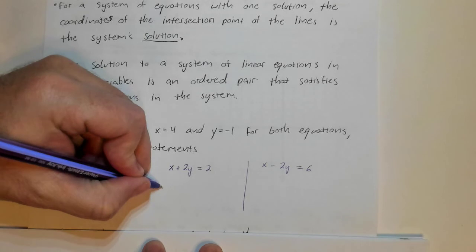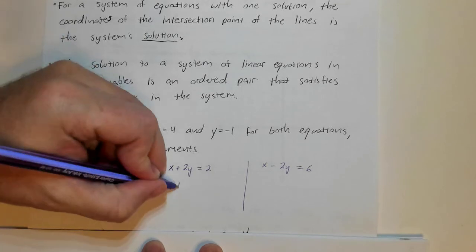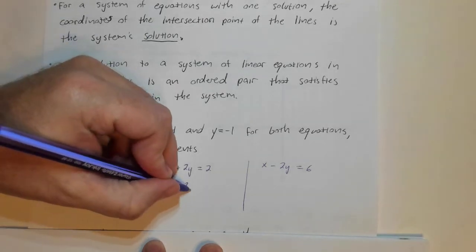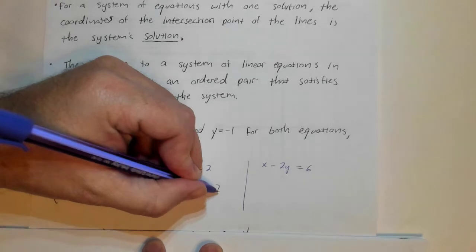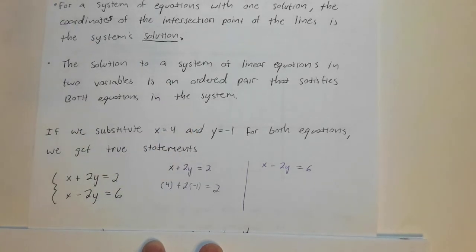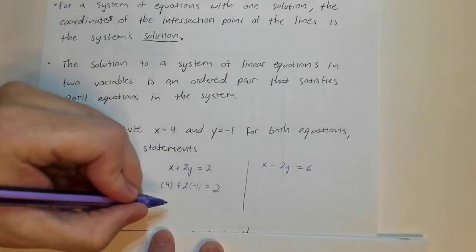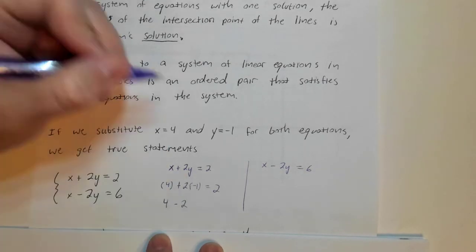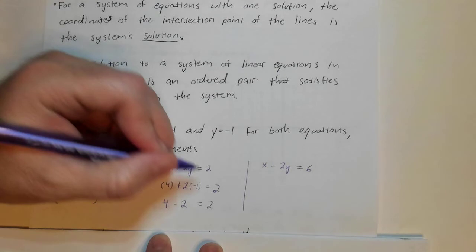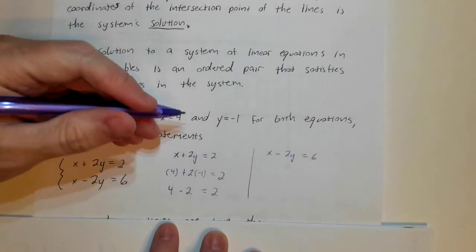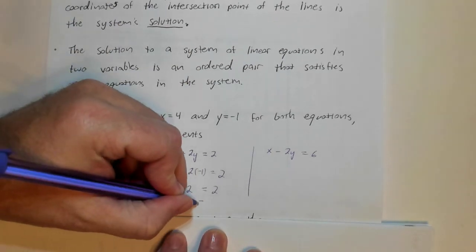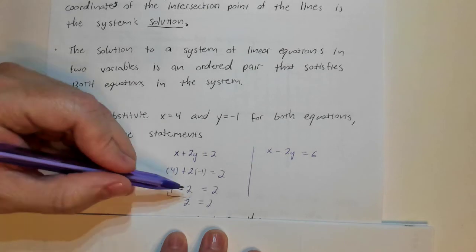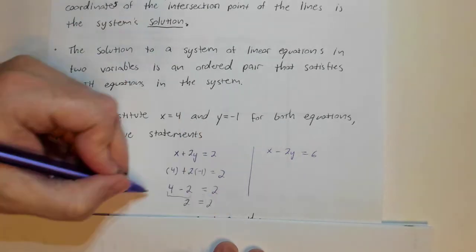So 4 for x minus 1 for y. If this is true, I better get 2 on this side. 4, 2 times minus 1 is minus 2 equals 2. So 4 minus 2 does, in fact, equal 2. 4 minus 2 is 2. So this is a true statement.